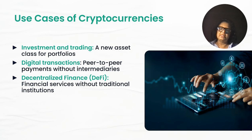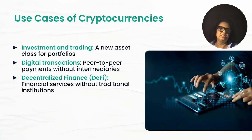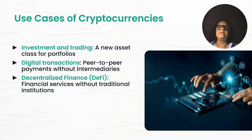What are the use cases of cryptocurrencies? Investment and trading — it's a new asset class for portfolios. On January 11th, the first spot Bitcoin ETF was approved, and since then, over $10 billion of investor money has flowed in. Peer-to-peer payments without intermediaries, and decentralized finance where you can access all sorts of financial services without the traditional friction. Cryptocurrencies are finding many applications and are essentially revolutionizing finance.